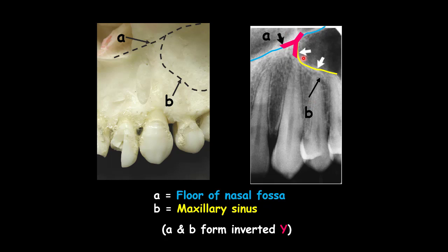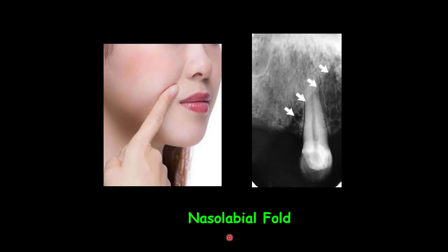This inverted Y is a useful landmark demonstrating the position on a periapical radiograph of the maxilla. The nasal labial fold is an opaque radiopaque line on periapical radiographs of the canine and premolar region. This radiopaque line appears because thick cheek tissue is superimposed on the teeth and the alveolar process. As aging increases the creasing of the skin, the nasal labial fold starts getting deeper and the fold becomes more evident in the periapical radiograph.